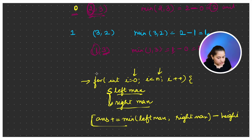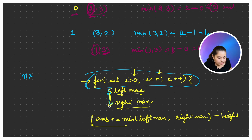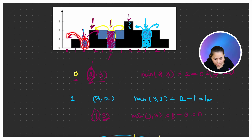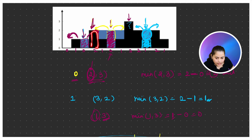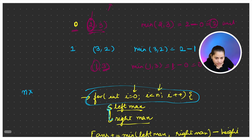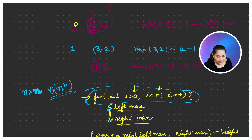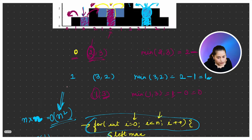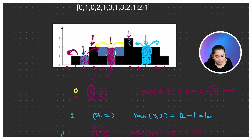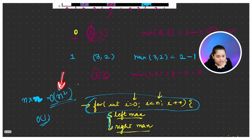What will be the time complexity for this approach? You are running over each and every bar, and for each bar you are calculating left and right max by traversing all elements. So for every element you traverse all others — that's O(n) per element, giving O(n²) time complexity overall. The space complexity is O(1) because we don't take any extra space. But this is quadratic, so your interviewer will ask: can you reduce it?